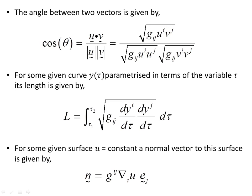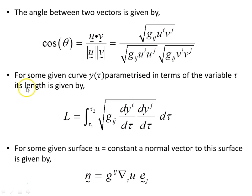Let's imagine some curve y(τ), where τ is the parameter and each of the coordinates are parametrized in terms of τ. In general relativity, τ might be the proper time experienced by a particle carrying its own clock. The length travelled by this object along this curve between τ1 and τ2 is given by integrating ds along the curve.